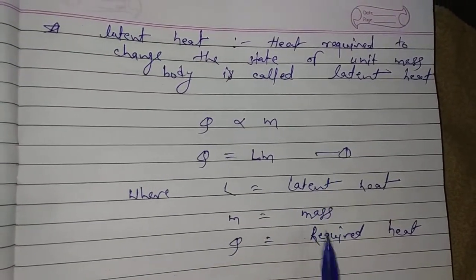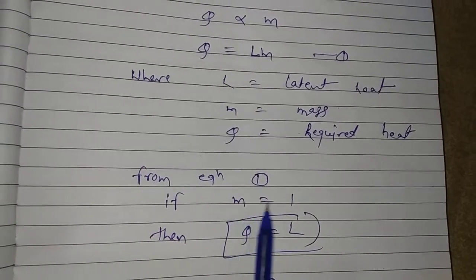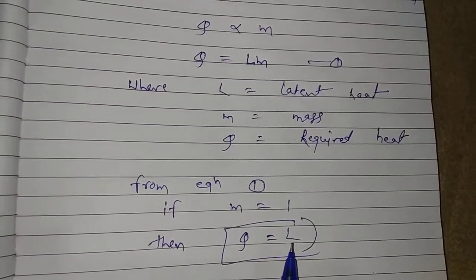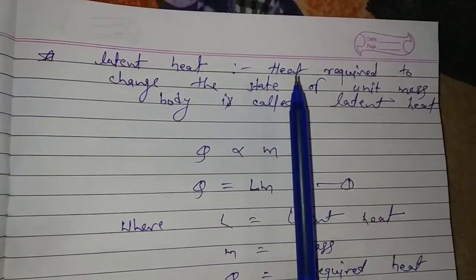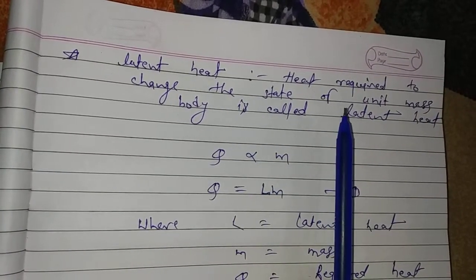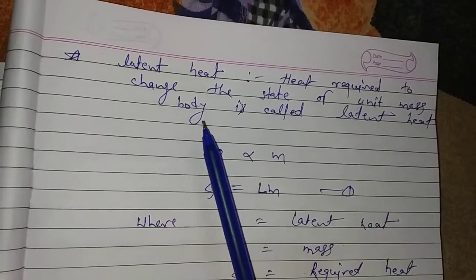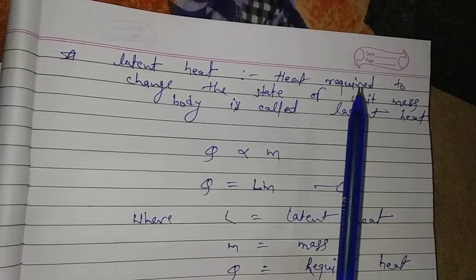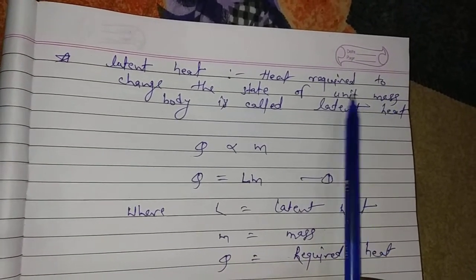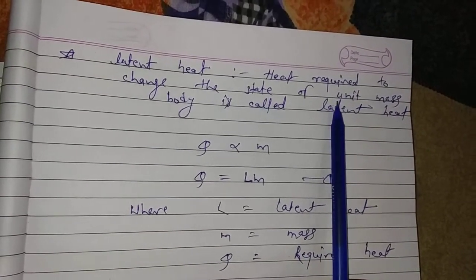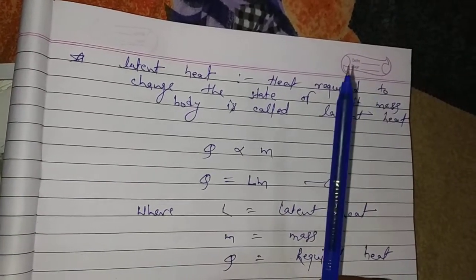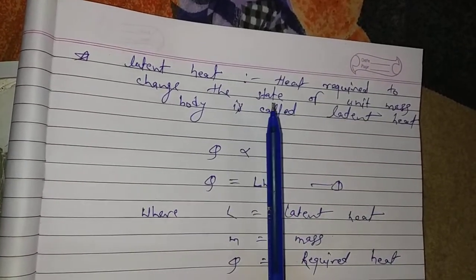If the mass is more, more heat will be needed to change the state. Removing the proportionality and multiplying by a constant, we get: Q = Lm. And this L is what we call latent heat. M means mass and Q means required heat. Now from this, if we put m = 1, then Q = L. So we can define latent heat: latent heat is the heat required to change the state of a unit mass body. The latent heat of water is 80, meaning 80 kilocalories per kilogram — that value is fixed.